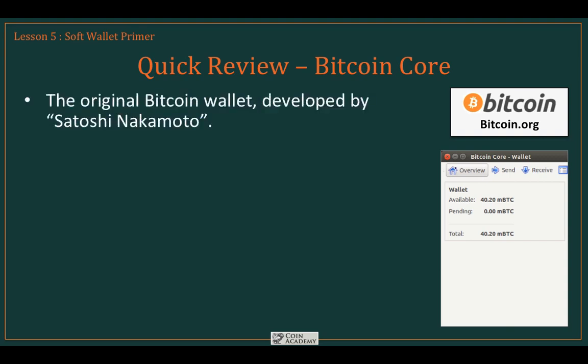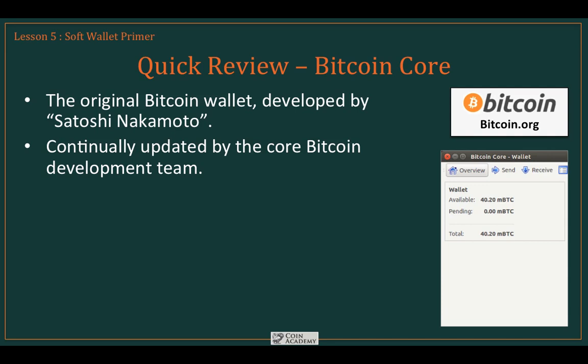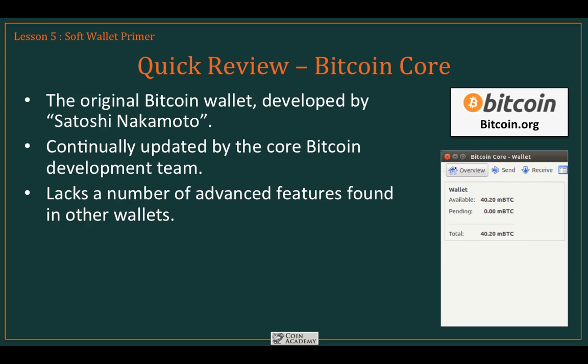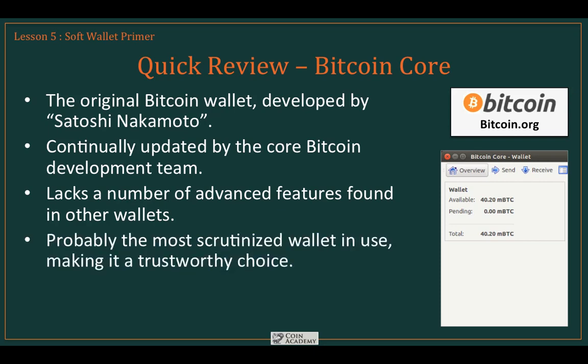Next is Bitcoin Core — the original Bitcoin wallet developed by Satoshi Nakamoto, continually updated by the core Bitcoin development team. It's extremely simplistic and lacks a number of advanced features found in other wallets, but since it's the most scrutinized wallet in use, it's also probably the most trustworthy choice. It is desktop only and is a heavy wallet. Notably, what Armory has done is take Bitcoin Core and put a nicer, more feature-rich interface on top of it — so if you're tempted by Bitcoin Core, you'd probably be better off installing Armory.